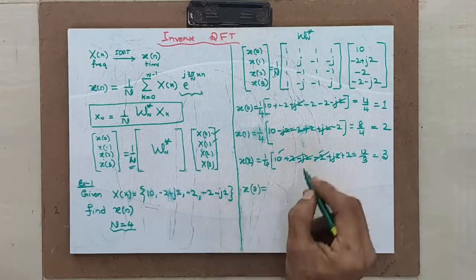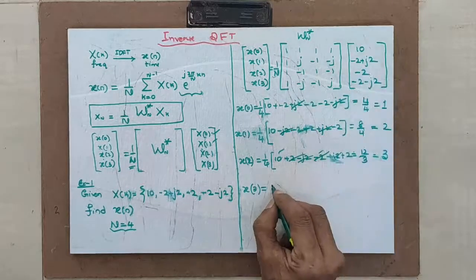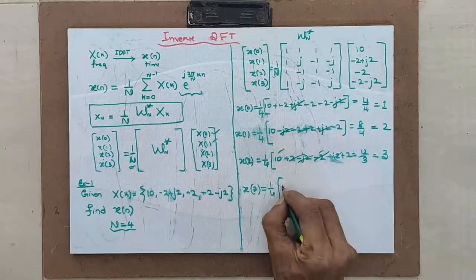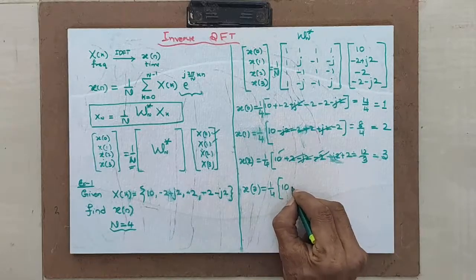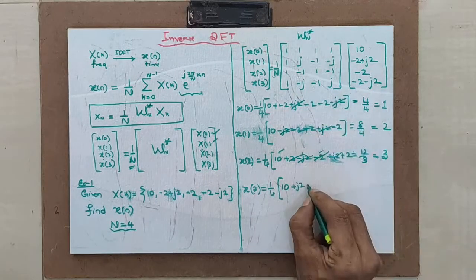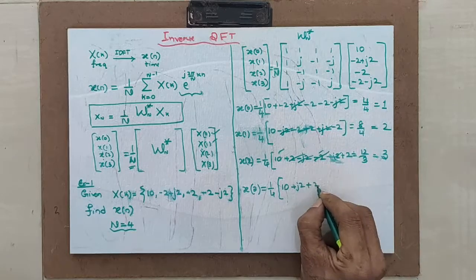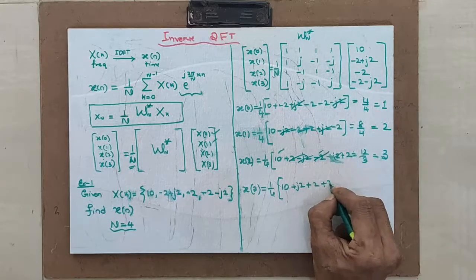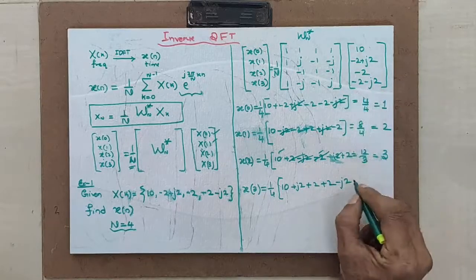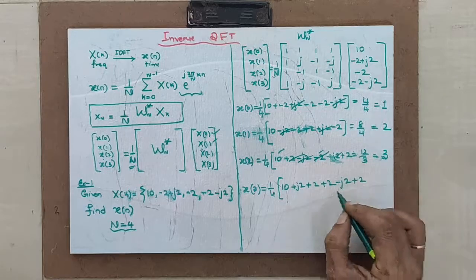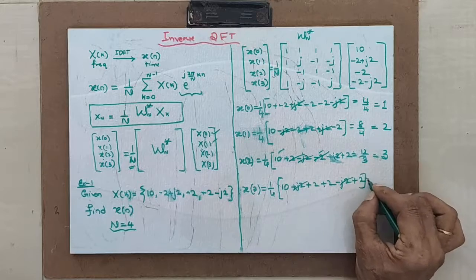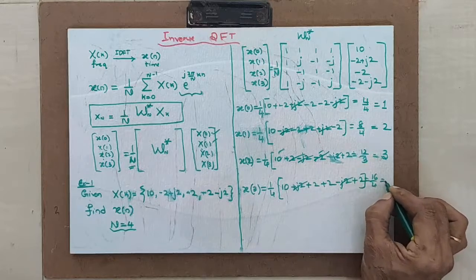x3: this row multiplied by the input column, times 1 by 4. Working through: 1 times 10, plus j times (minus 2 plus j2) — where j squared times minus 2 gives plus 2; then minus 1 times (minus 2) gives plus 2; then minus j times (minus 2 minus j2), where minus j squared times minus 2 gives plus 2. The imaginary terms cancel, giving 10 plus 2 plus 2 plus 2 equals 16. So x3 equals 16 divided by 4, which equals 4.